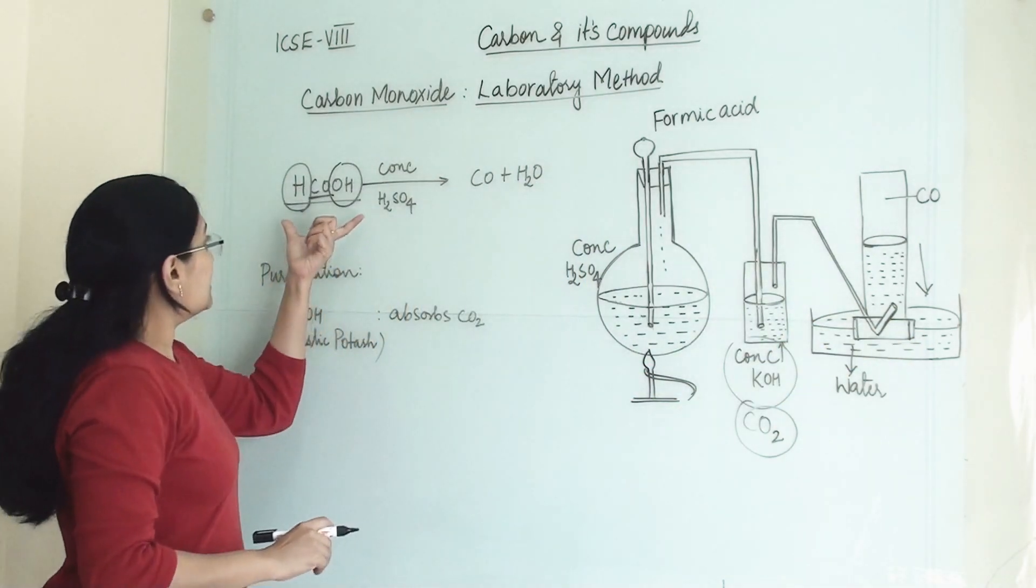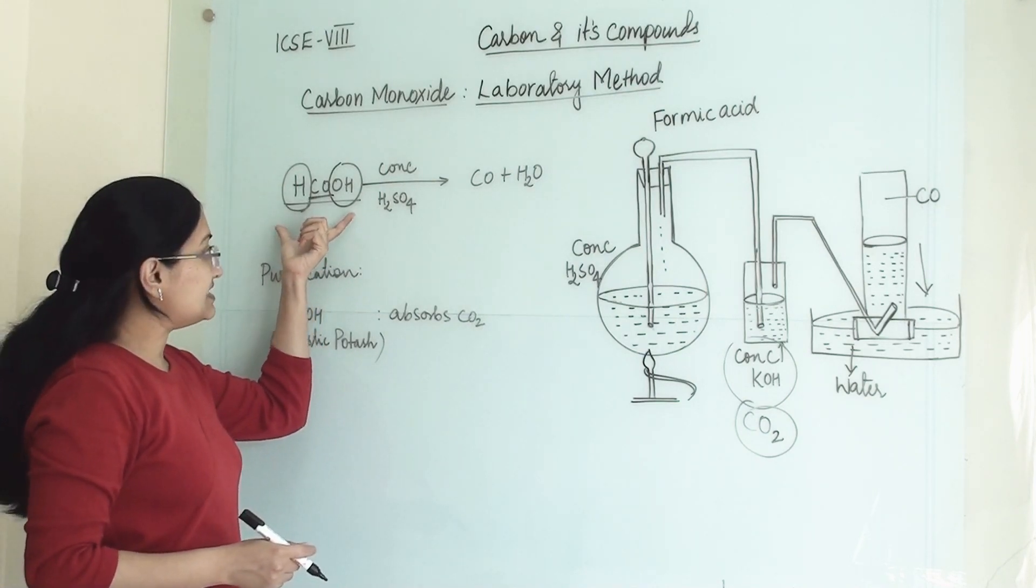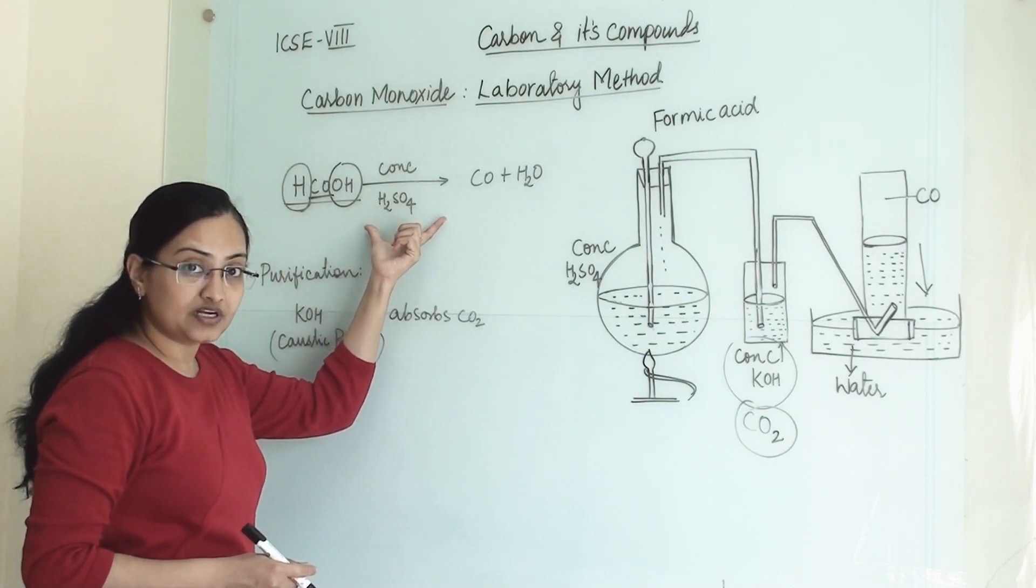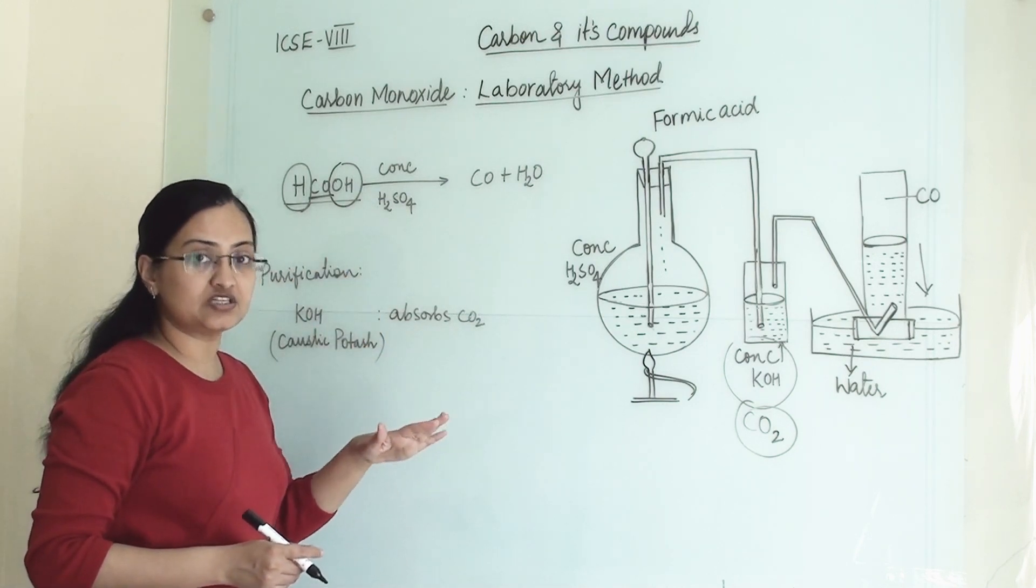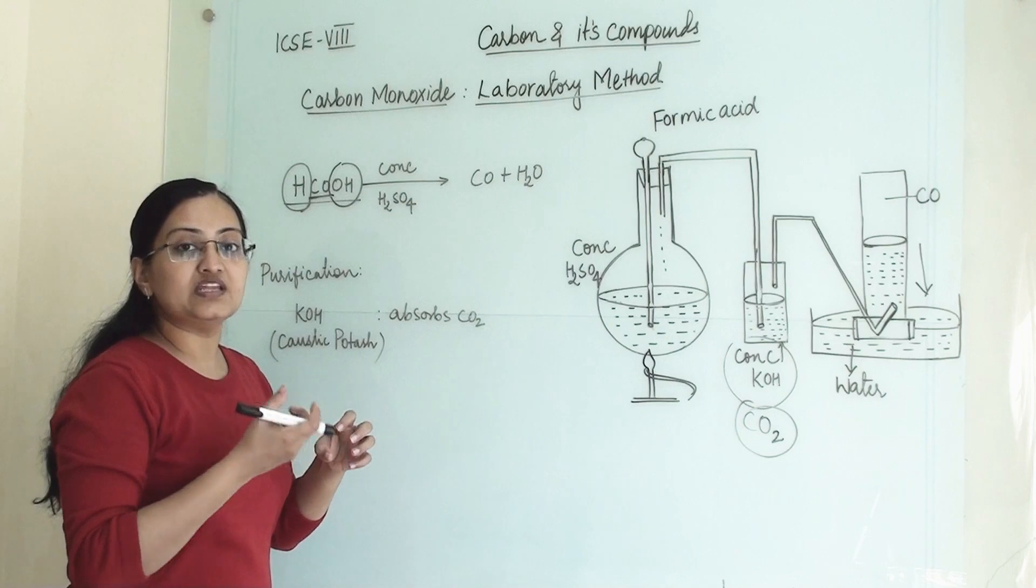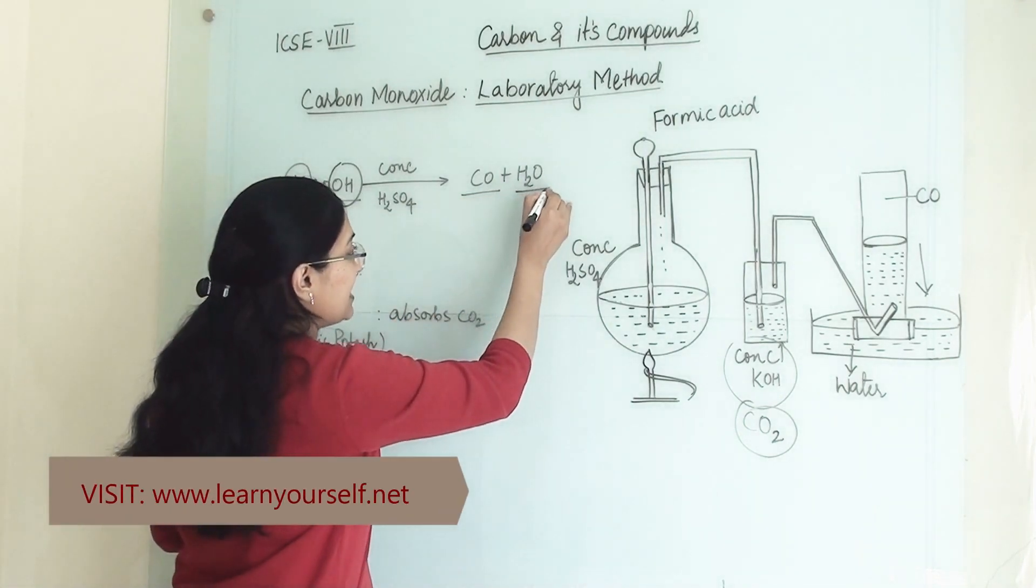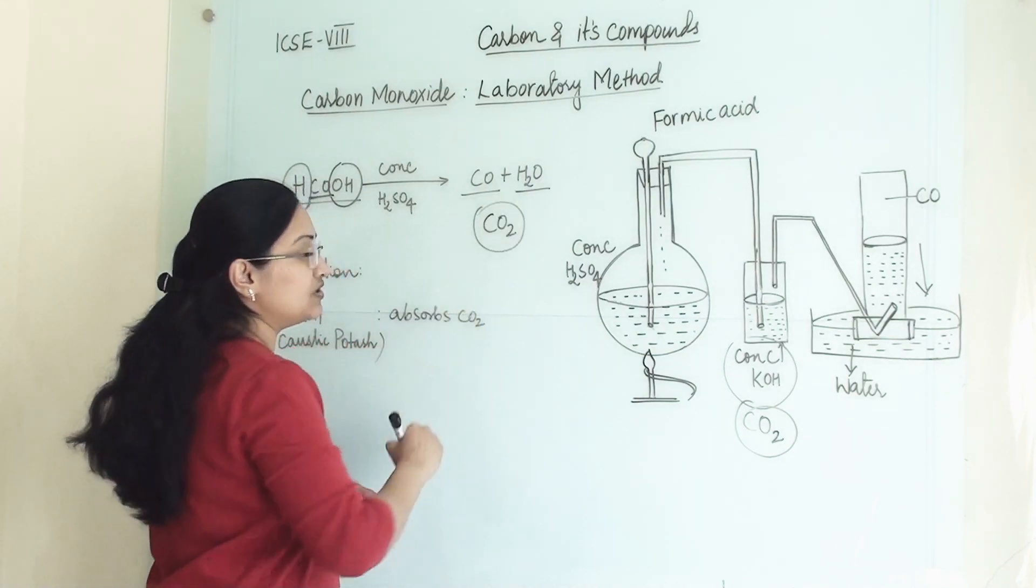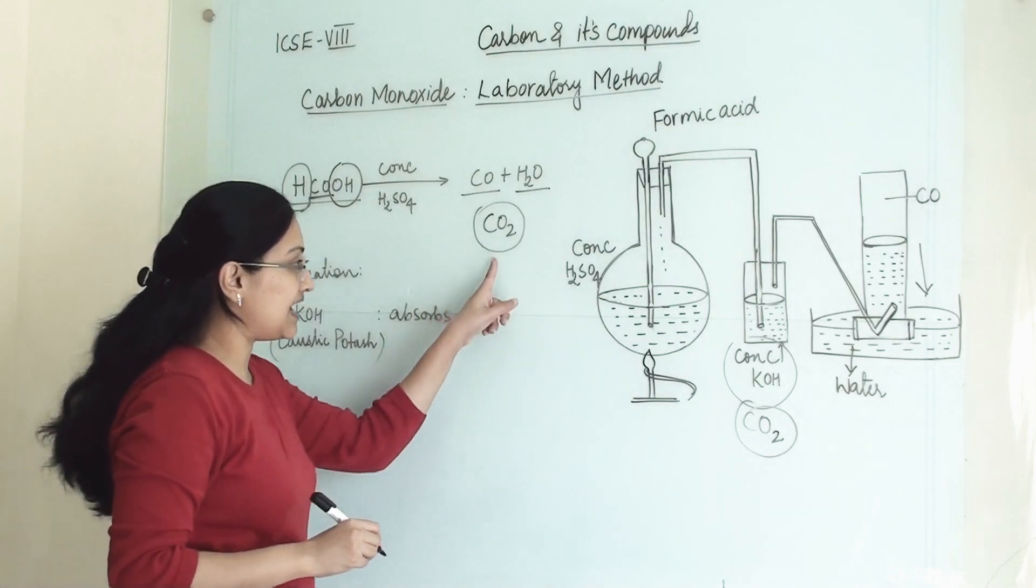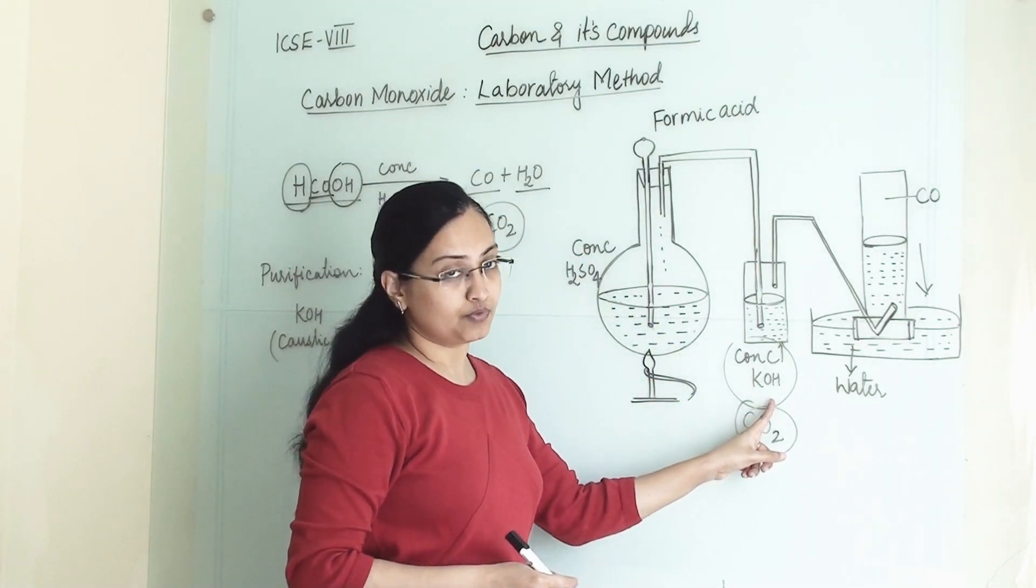Again, this is a formula of formic acid. When it is mixing with concentrated H2SO4, H2SO4 is a dehydrating agent which will eliminate water molecule from formic acid. So it will give us carbon monoxide and water. But sometimes carbon dioxide gas will also generate. So that will get absorbed in this caustic potash.